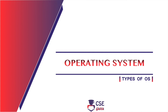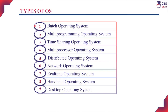Welcome to CSE Guru. In this session, we will discuss about types of operating systems. The different types of operating systems are categorized into batch operating system, multiprogramming operating system, timesharing system, multiprocessor operating system, distributed, network, real-time operating system, handheld operating system, and desktop operating system. We will discuss one by one in detail.